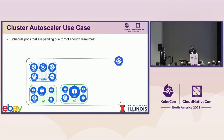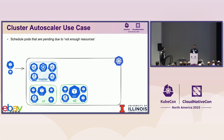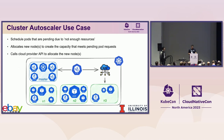Cluster Autoscaler mainly does two things: it scales up clusters when pods are pending due to insufficient resources, and scales down clusters by removing underutilized nodes. Consider a scenario where you have a Kubernetes cluster with nodes at capacity, and new pods show up pending due to lack of resources. Cluster Autoscaler calls the Cloud Provider API to allocate a new node, and the scheduler assigns the pending pods to that node. The issue is that Cluster Autoscaler only considers pod resource requests — not actual utilization of running pods — so your cluster could be very underutilized yet you still bring new nodes online, increasing your carbon footprint and wasting money.